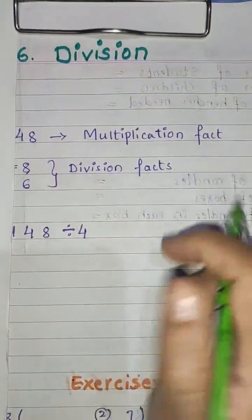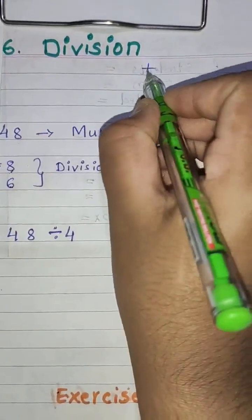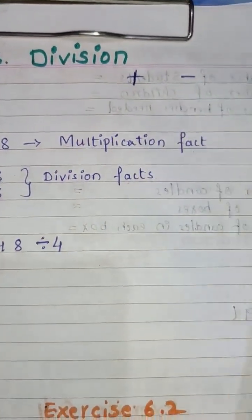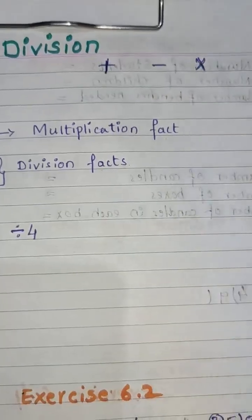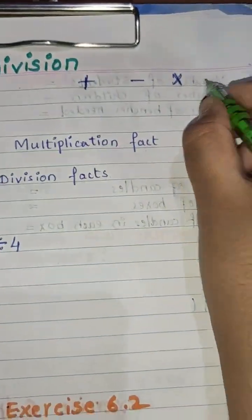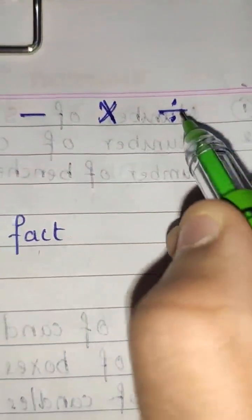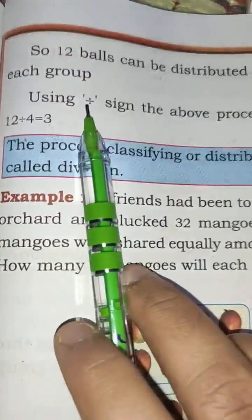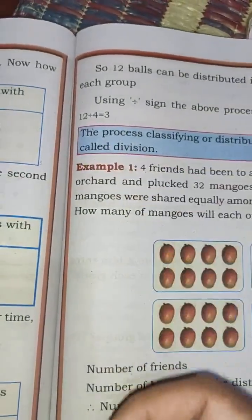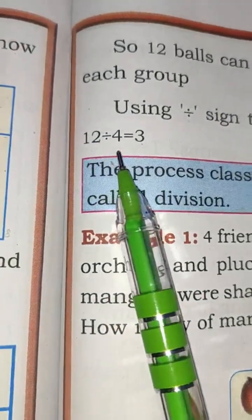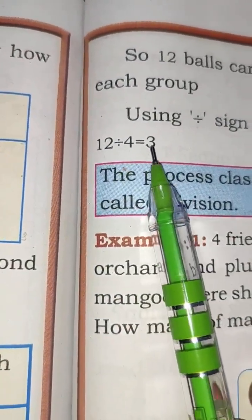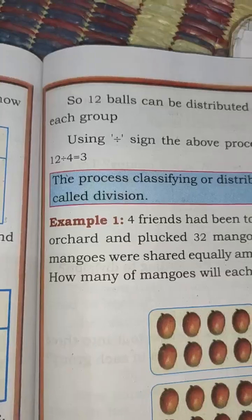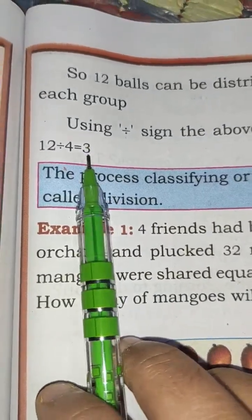Now let us see what is the sign of division. The plus sign is the sign of addition, this is the sign of subtraction, and this is the sign of multiplication. The sign of division is this one here. So by using this division sign, the above process — 12 balls — can be written as 12 divided by 4 is equal to 3. Later on we will come to know how this 3 comes.